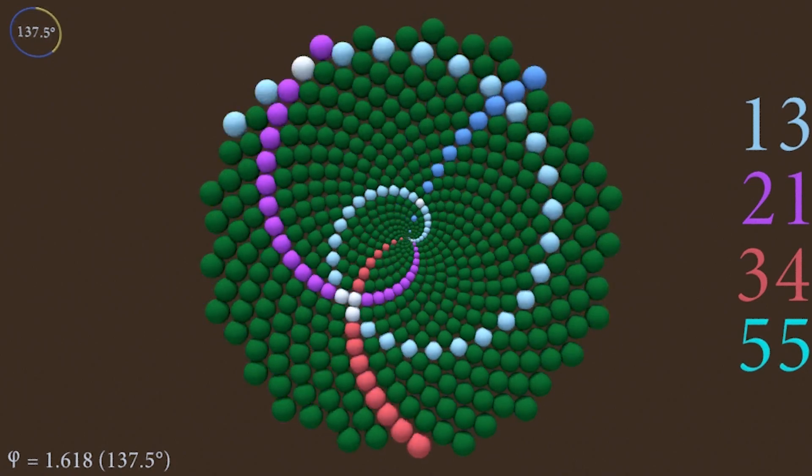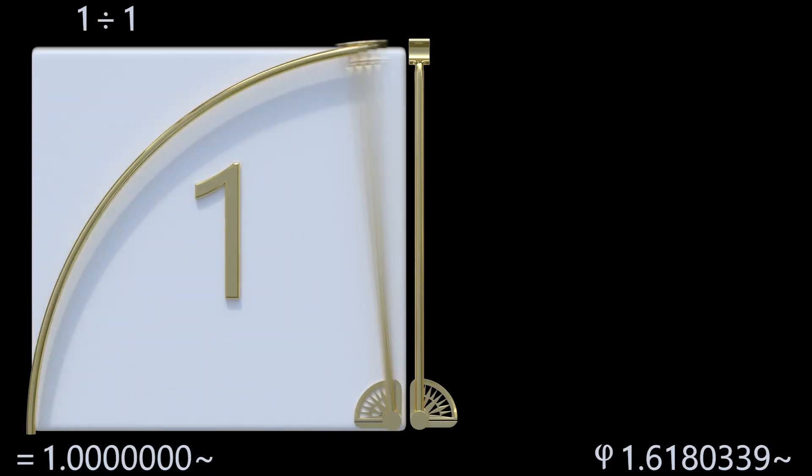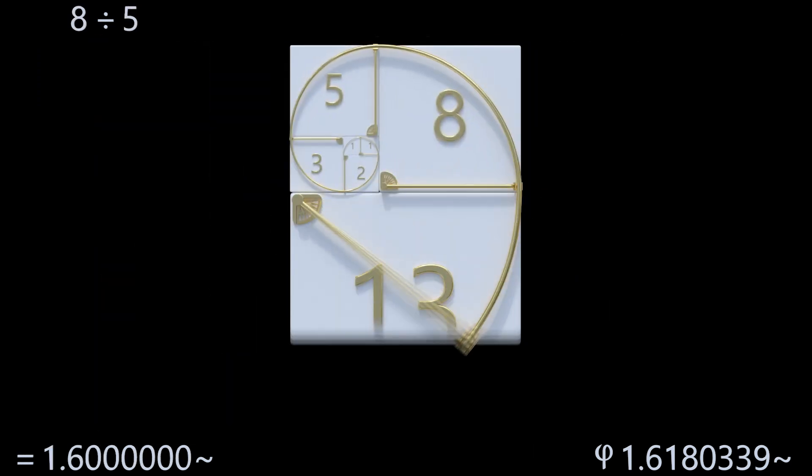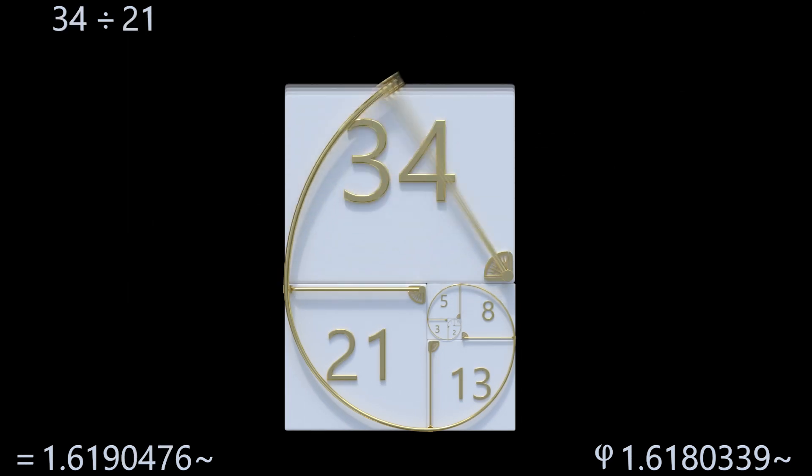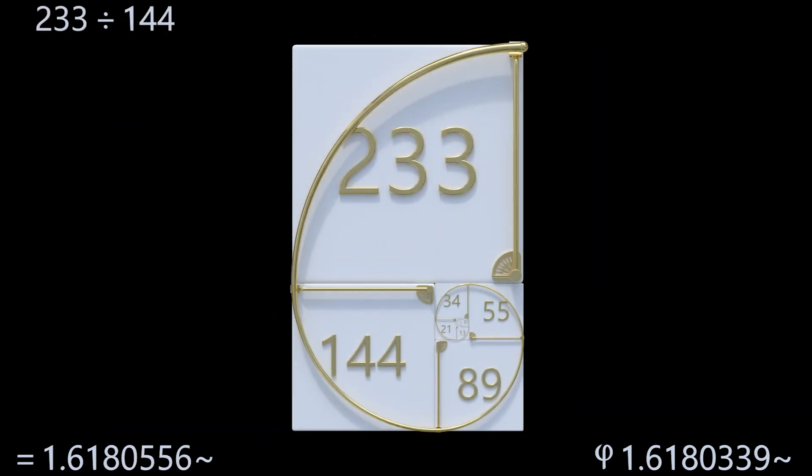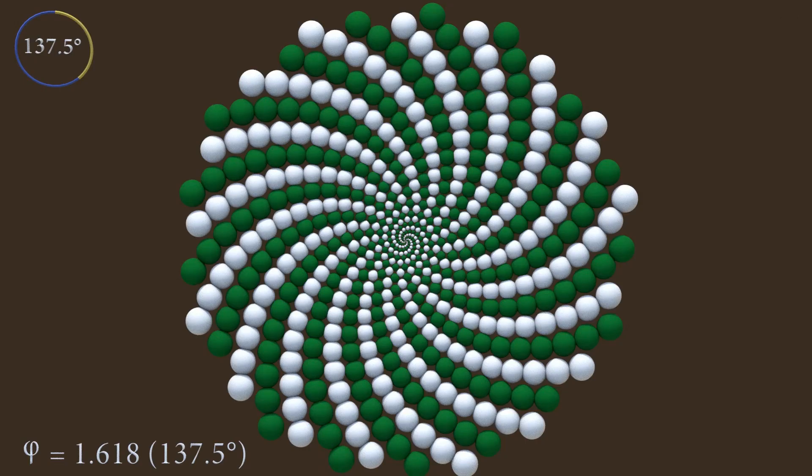The different spirals found within the plant follow the Fibonacci sequence: one plus one is two, one plus two is three, two plus three is five, three plus five is eight. This sequence is closely related to the golden ratio and the golden angle, with each number appearing within Fibonacci flowers and plants in remarkable ways.